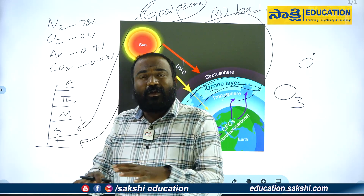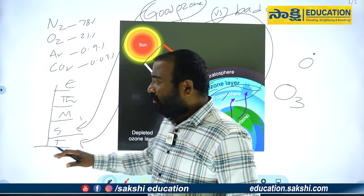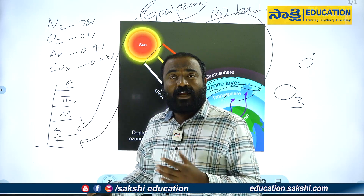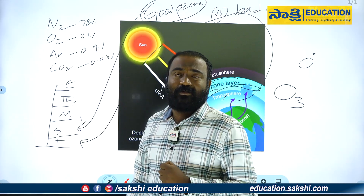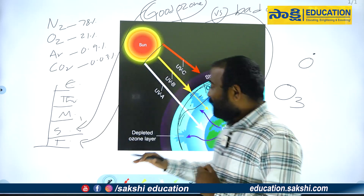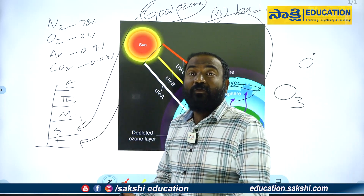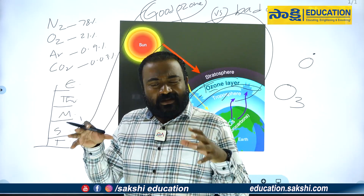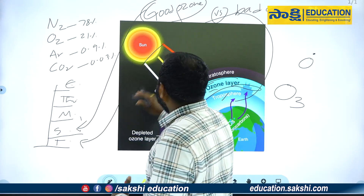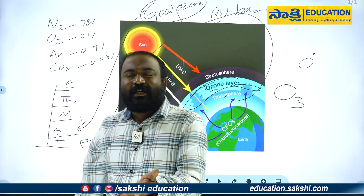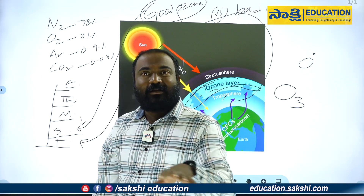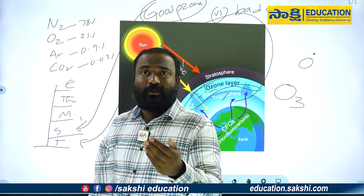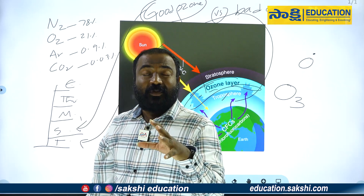In the troposphere, there is no good ozone — the good ozone is in the stratosphere. In the troposphere, we have bad ozone. This is a dangerous problem. When primary pollutants and chemical interactions develop ozone in the troposphere, if you inhale it, we have respiratory problems and other health issues. We also consider this as an irritant. Ozone in the troposphere is a secondary pollutant.